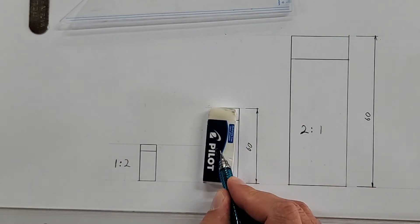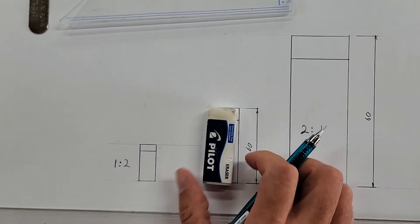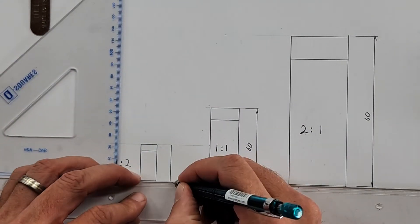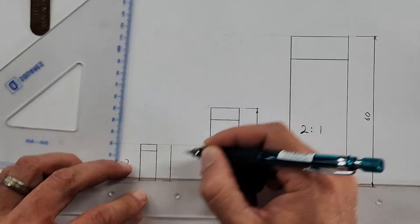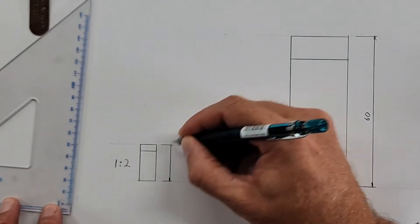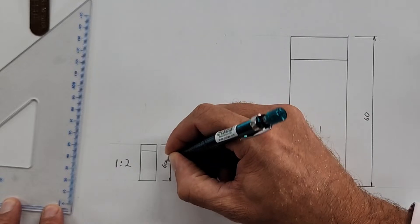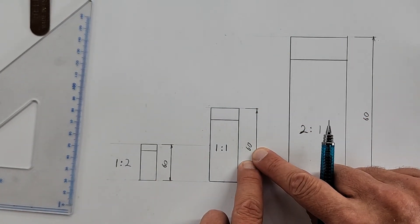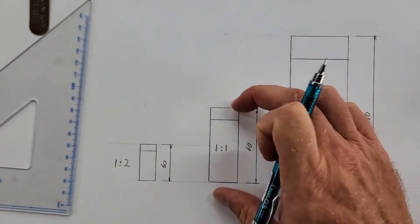That one there represents this one, okay? So this one, what would its measurement be if I would have a measurement here? It's now scale 1:2, it's half the scale. This measurement will also read 60.